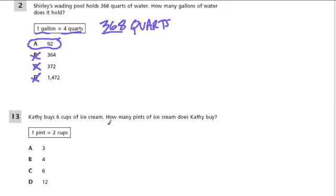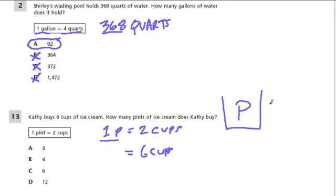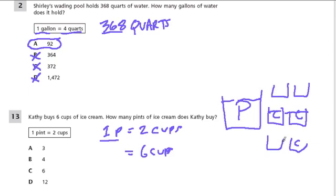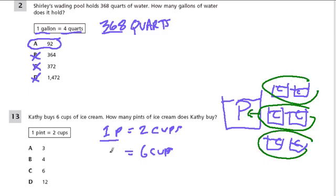Kathy buys six cups of ice cream. How many pints of ice cream does Kathy buy? If every one pint equals two cups, and now we have six cups, we have to have fewer pints because a pint is a larger amount. We've taken two cups and made three groups of them, and every one of these groups is one pint. So we have three pints. Two times three is six, so one times three is three — it's three pints.